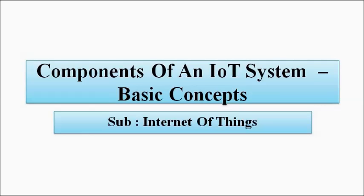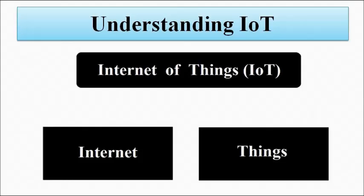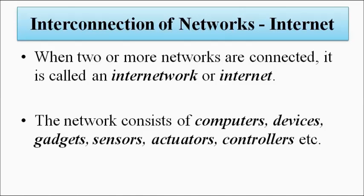It can involve wireless sensor networks, cloud computing, big data — all these will be there. But we are discussing specifically how all these things come together to bring the whole IoT into picture. IoT basically is Internet of Things, where all things driven electrically or electronically are connected to each other with the help of the Internet — the interconnection of networks.